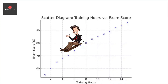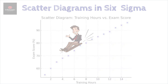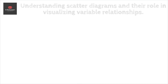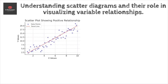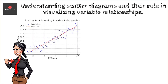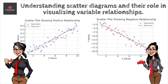If you've ever heard the phrase 'a picture is worth a thousand words,' you can quickly grasp the power of a scatter diagram. This simple yet effective tool can help you visualize and understand two variables' relationships. A scatter diagram, also known as a scatter plot, is a type of graph that shows how one variable affects another. It's an essential aspect of the analyze phase in the DMAIC framework of Six Sigma.